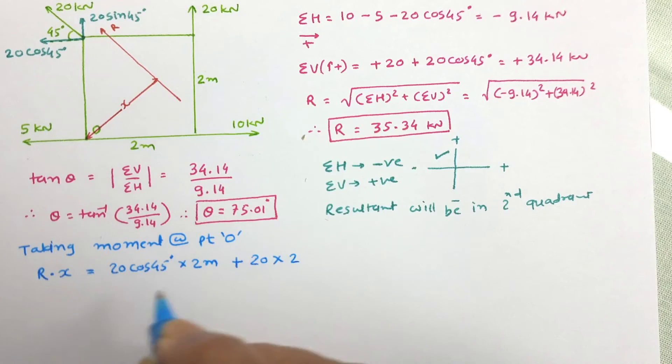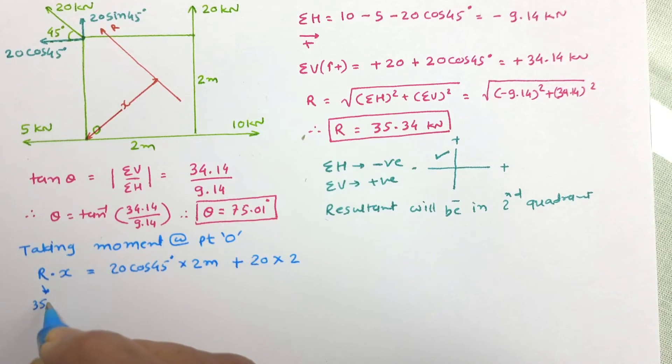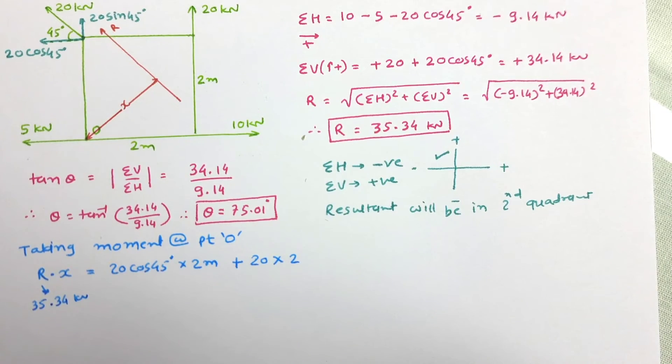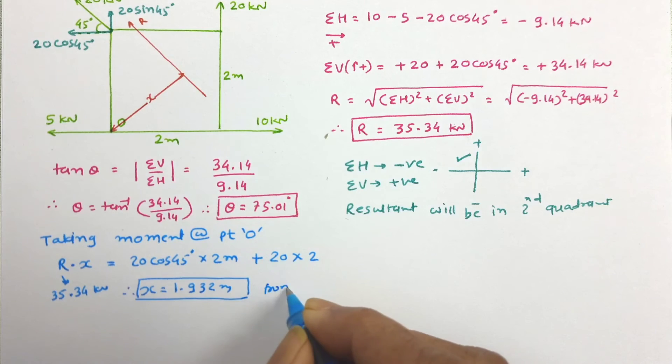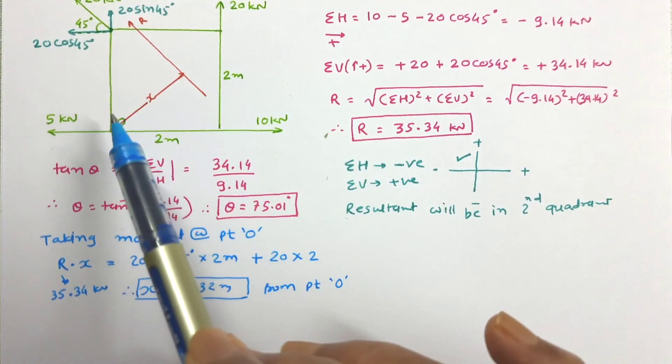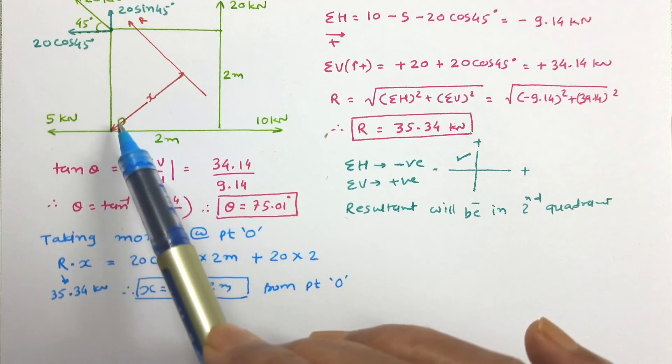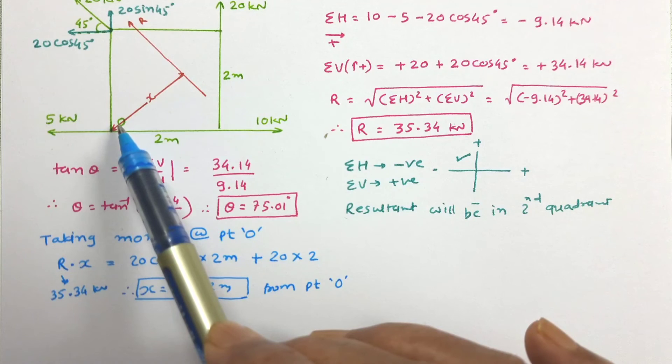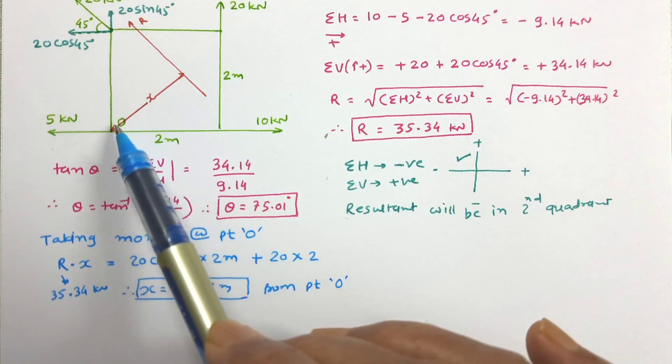So let us simplify this and work out the value of x because R is known to us, value of R is 35.34 kN. By solving it, the value of x has been obtained as 1.932 meters. So this resultant lies 1.932 meters perpendicular from point O.